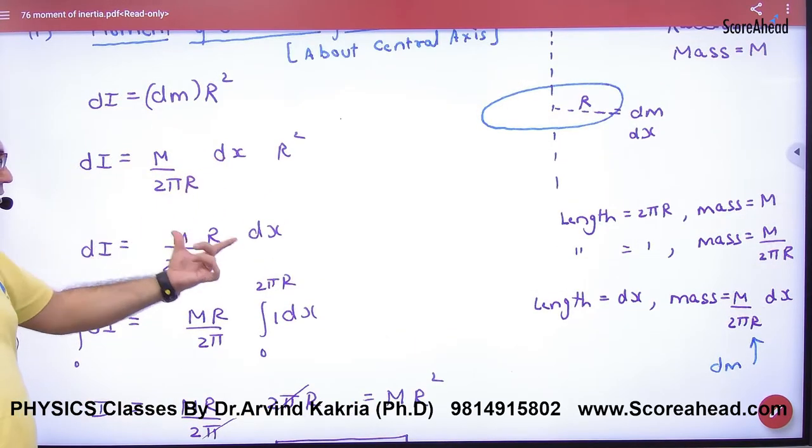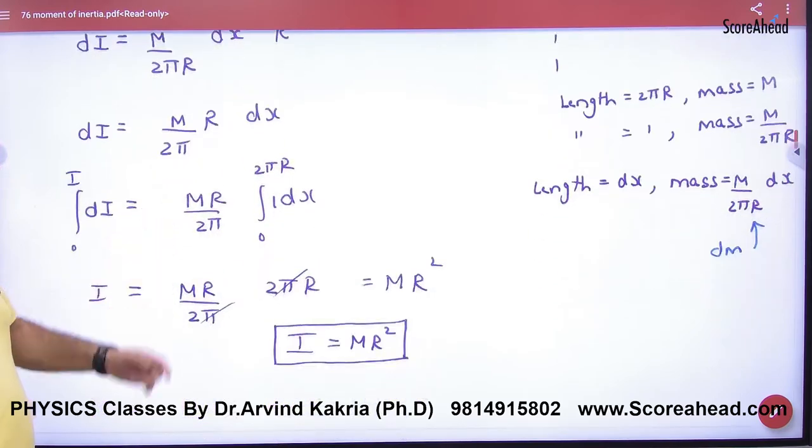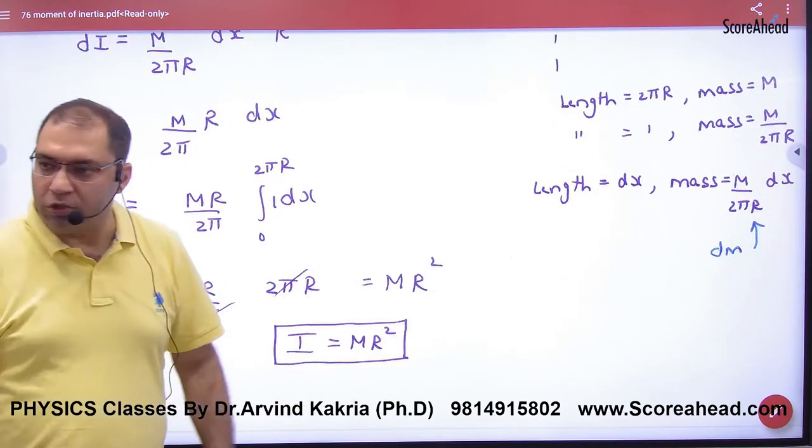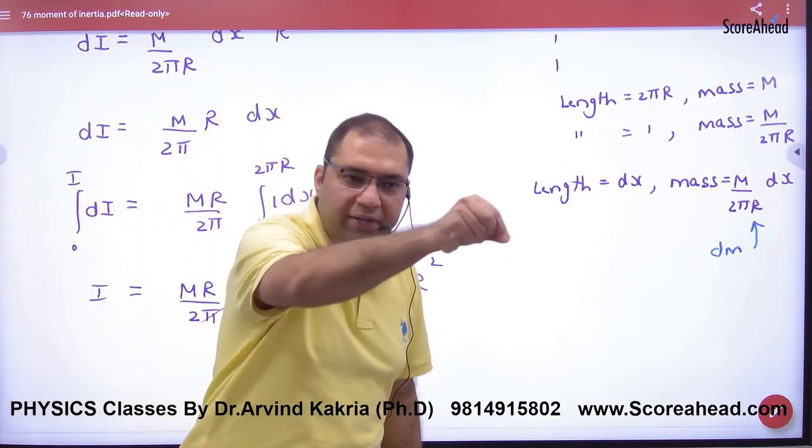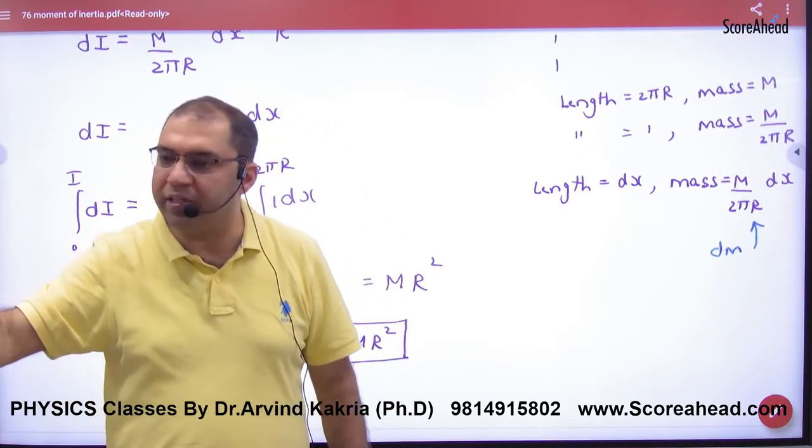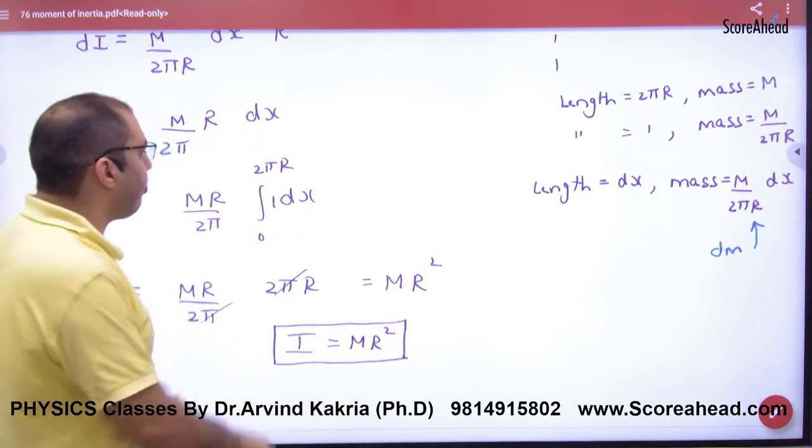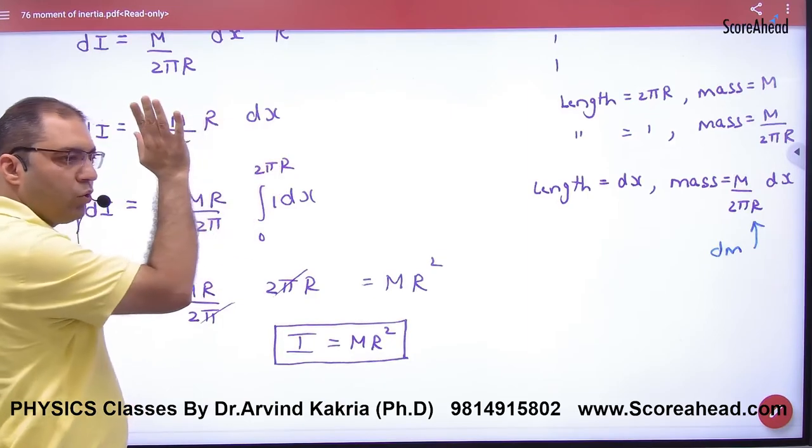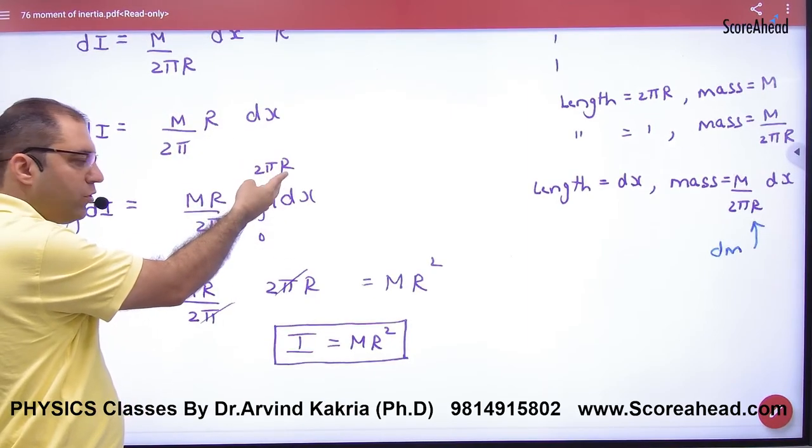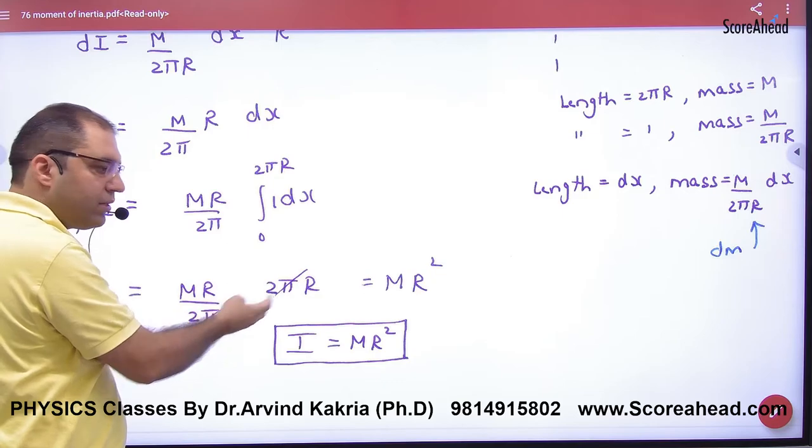Now take the total moment of inertia. Integrate dx over the entire length from 0 to 2πR. So we put the limit 2πR. The 2π cancels—what is the final answer?